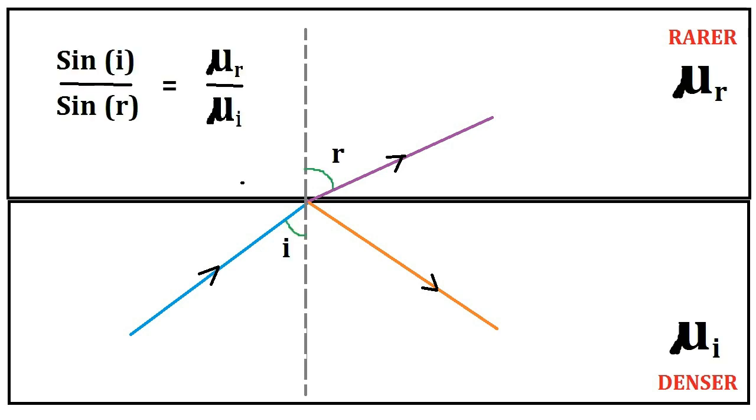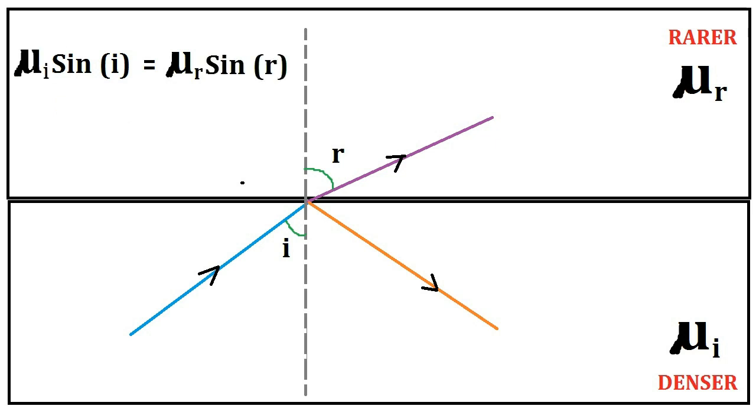Considering Snell's law, which states that the ratio of the sine of the angle of incidence to the sine of the angle of refraction is constant. That is, sin(i)/sin(r) equals the refractive index of the medium containing refracted light divided by the refractive index of the medium containing incident light, which can also be written as μ_i sin(i) = μ_r sin(r), where μ_i and μ_r are constants.